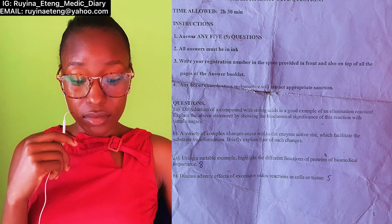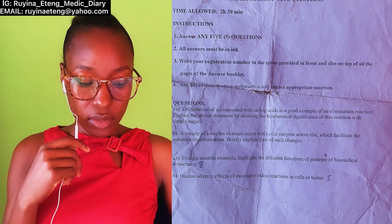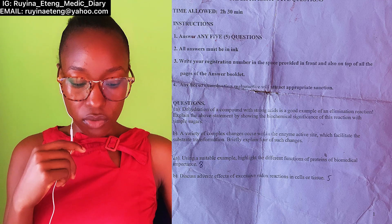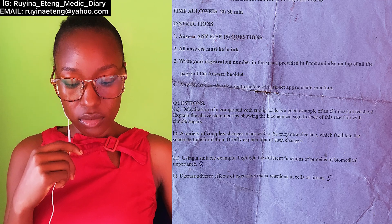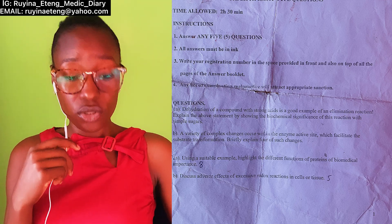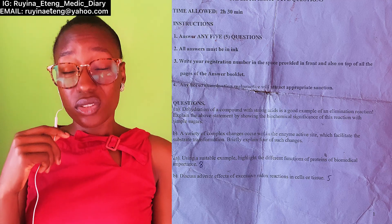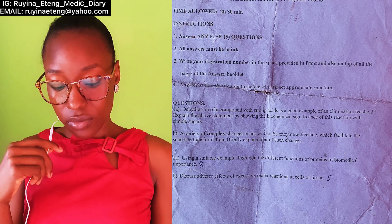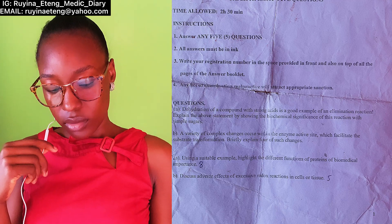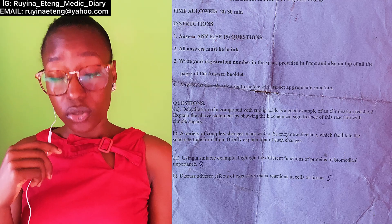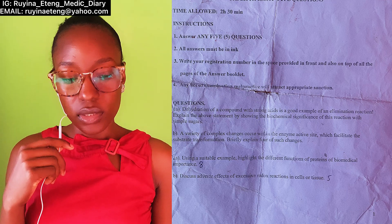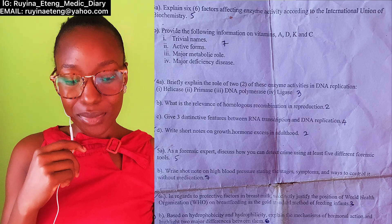Question 2B said: 'Discuss adverse effects of excessive redox reactions in cells and tissues.' This is also included in our lecture slide — you just explain how redox reactions give rise to reactive oxygen species and their adverse effects on the cell, particularly on the cell membrane. Straightforward.